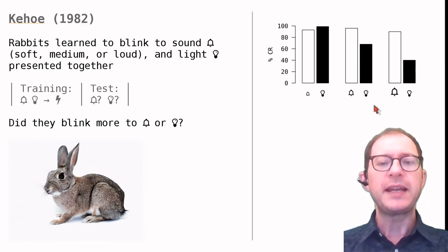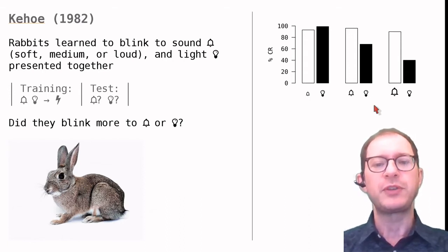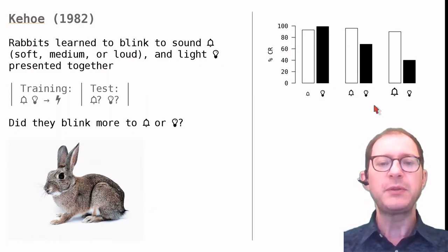Just to have an idea, 93 decibels is about the loudness of a loud subway train approaching. The rabbits trained with the 93 decibel tone blink to the light less than 40 percent of the time. We say that the medium and loud tones overshadowed the light, that is that the animals prefer to learn about one stimulus, the tone, over the other, the light.